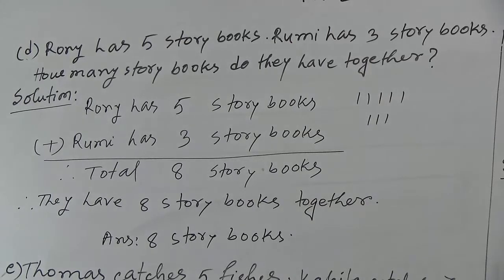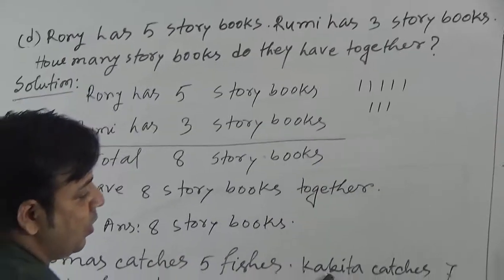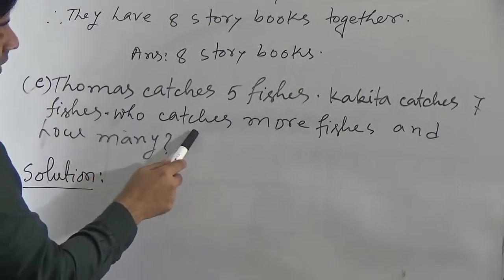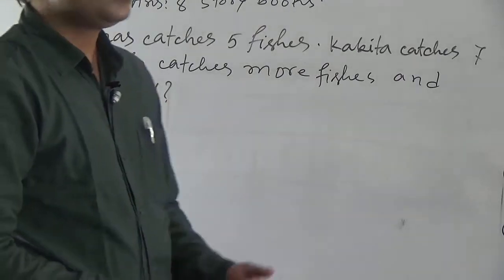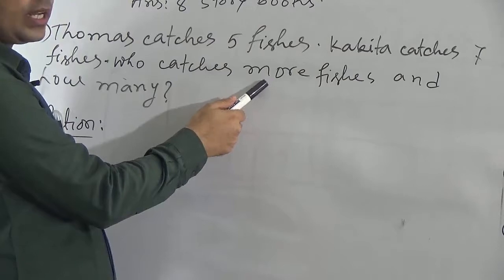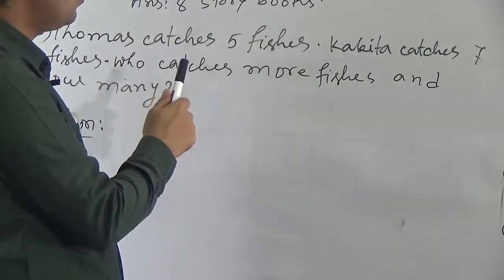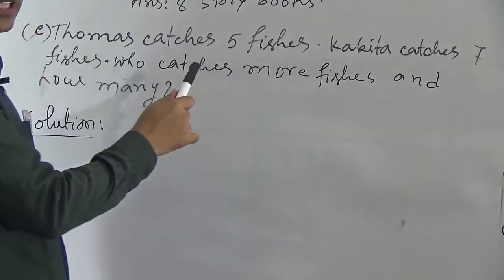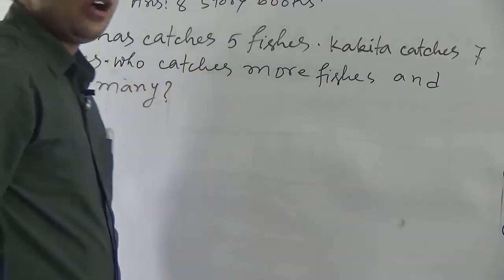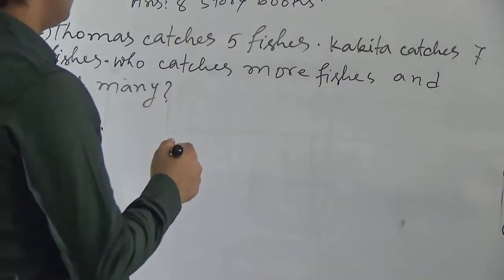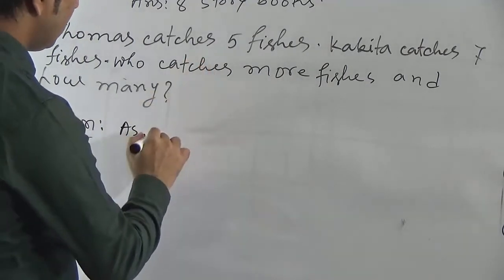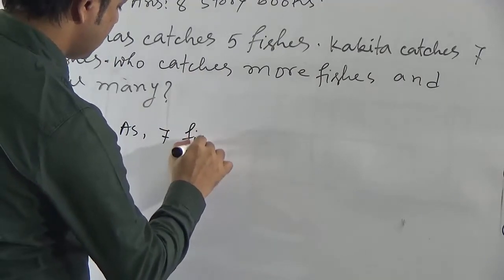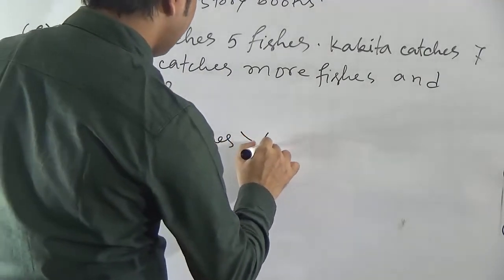Then come to the next question. Thomas catches 5 fishes. Covita catches 7 fishes. Who catches more fishes and how many? It means we have to find two things: first, who catches more fishes, and second, how many more. So we can write: 7 fishes is greater than 5 fishes.